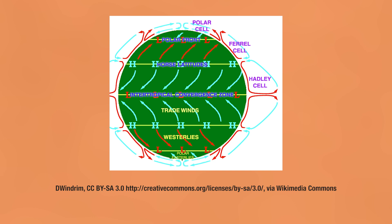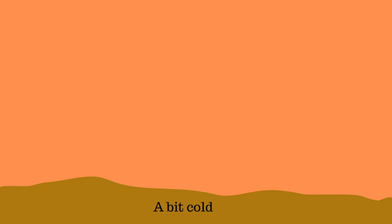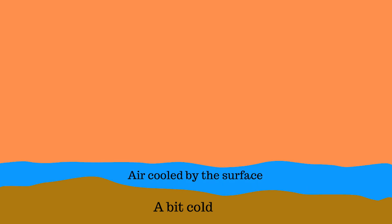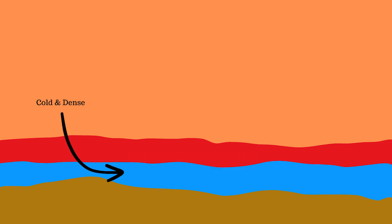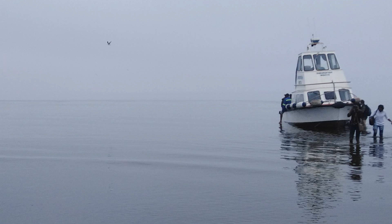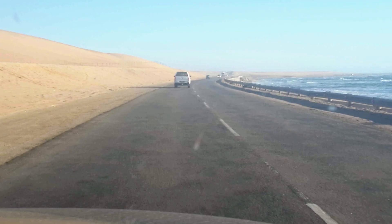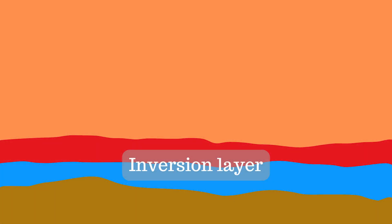If a place on Earth's surface is cold, it cools the air above it. If a nearby area is warmer, that warmer air can move in over the cold air, creating an inversion layer — cold, dense air at the bottom that doesn't rise because warmer air sits above it. This commonly occurs near cold ocean currents: the current cools the air just above it, and warmer air from nearby land moves in over it, forming a very stable body of air. Those are all the basics, and now we can look at how these factors work together to form deserts.